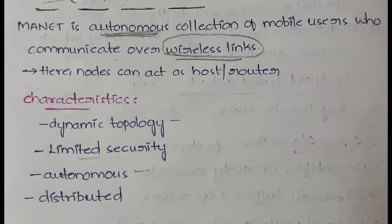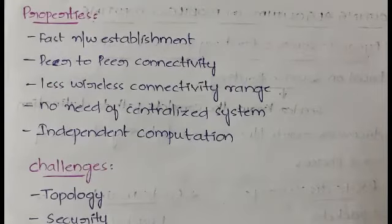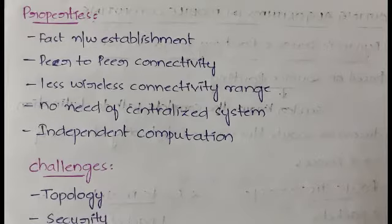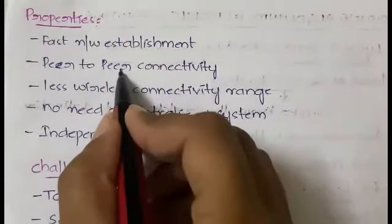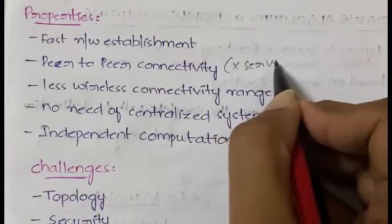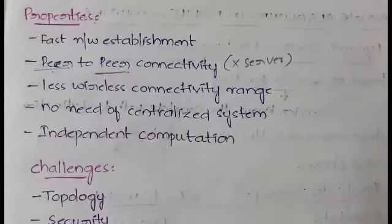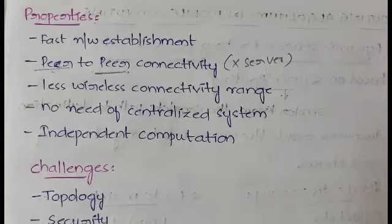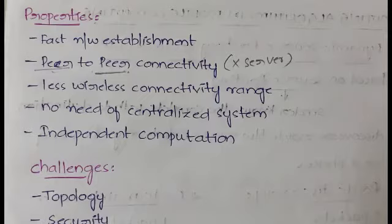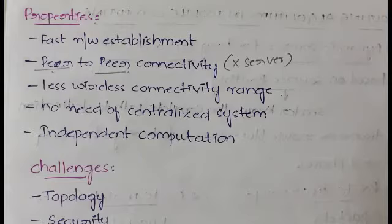Now for the properties of MANET. Number one is fast network establishment — a network can be established between two mobile devices faster. Next is peer-to-peer connectivity — there is no server concept here; one mobile device is directly connected to another. We also have a limited wireless connectivity range, no need for a centralized system since everything is autonomous and independent, and there is independent communication with full freedom.